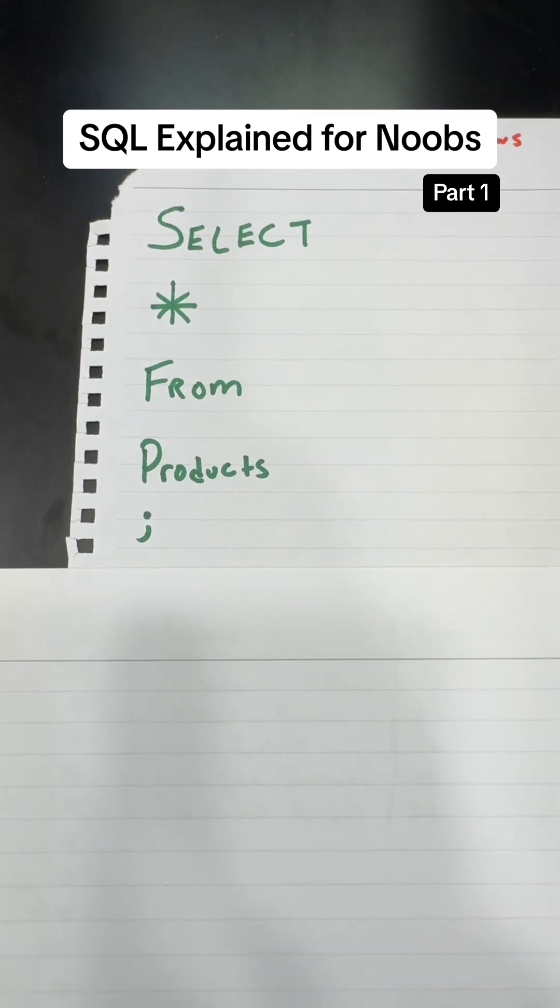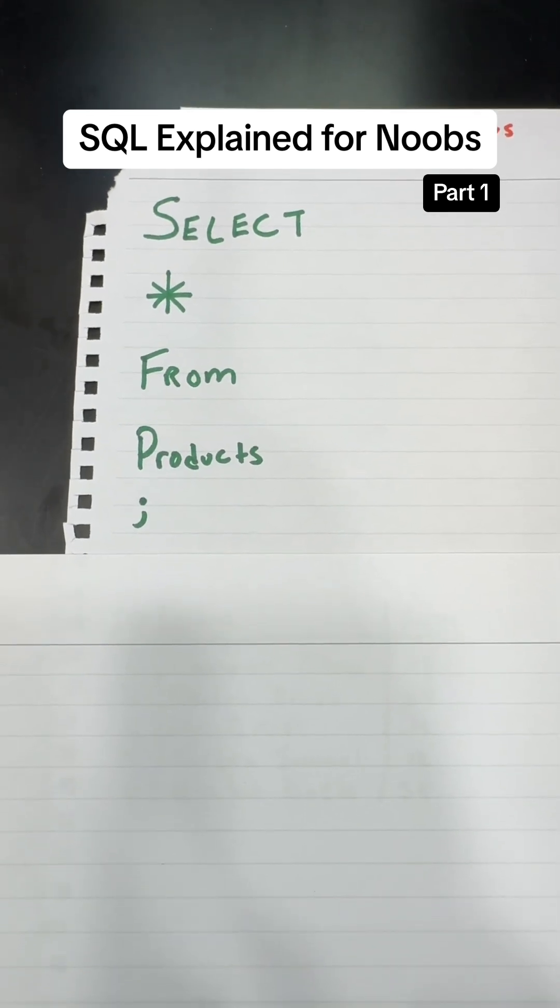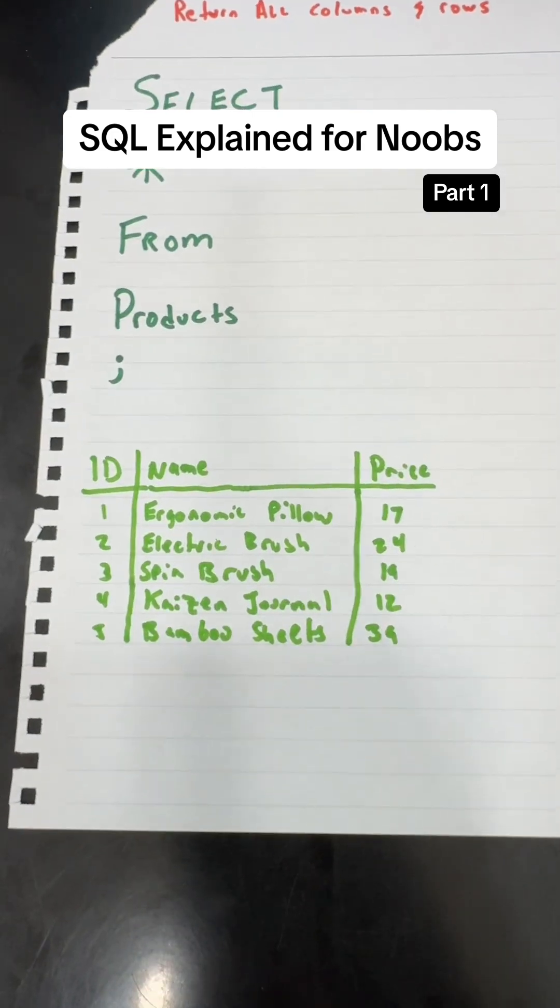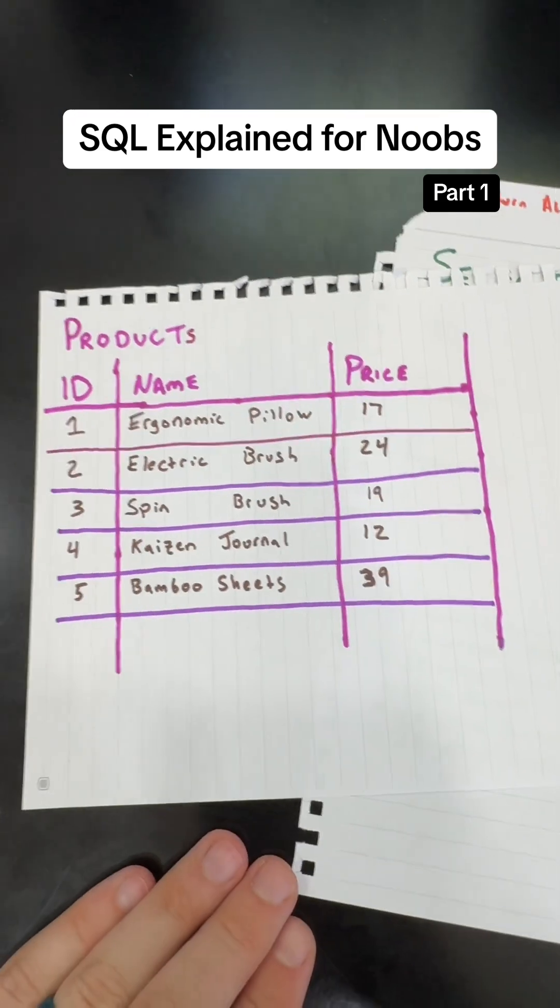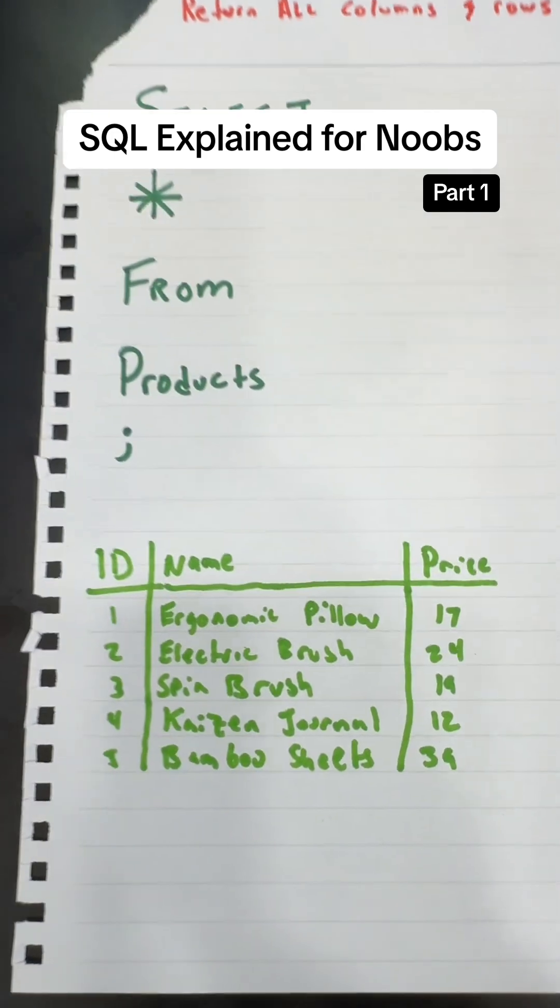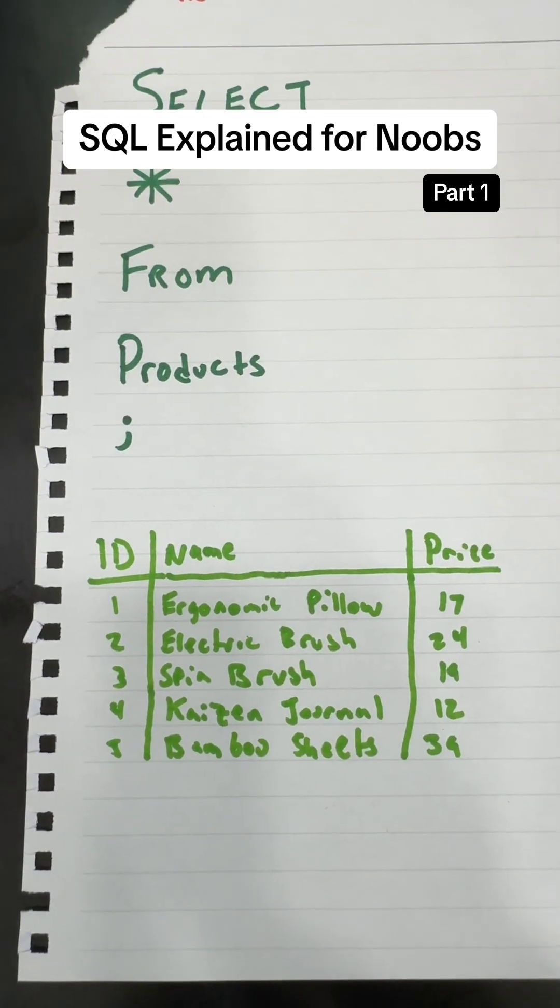Then you're going to end it with a semicolon that lets SQL know that I'm done and here would be your results. It would actually just be the exact same of the entire database that we showed earlier because we were returning all columns and all rows.